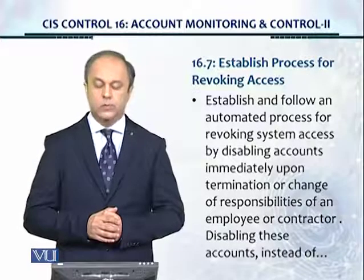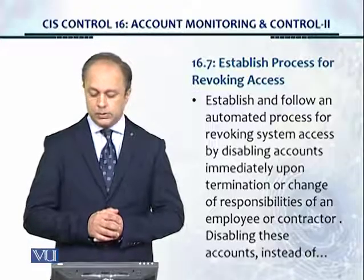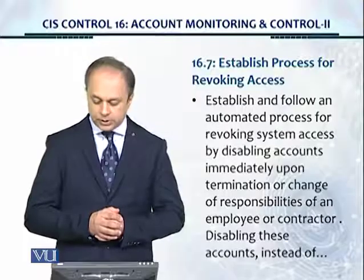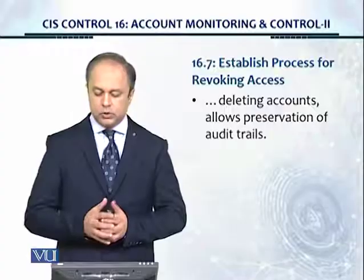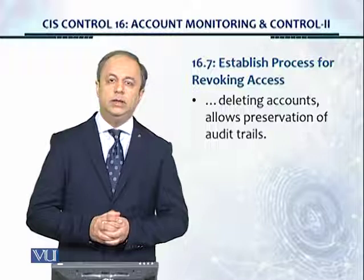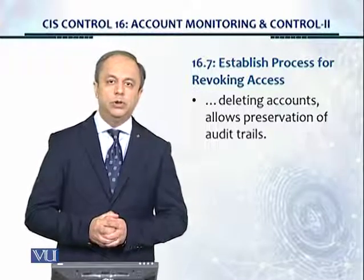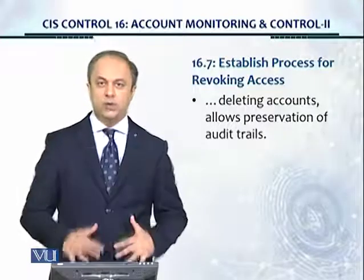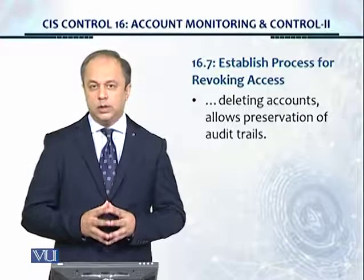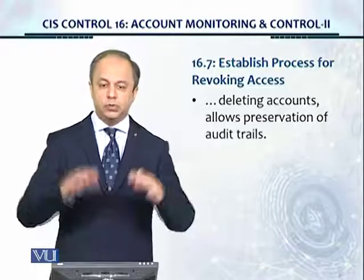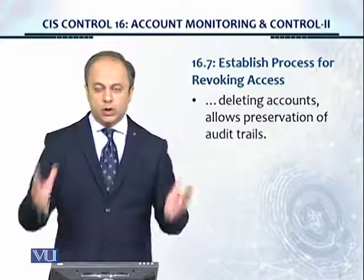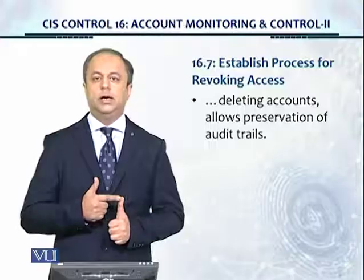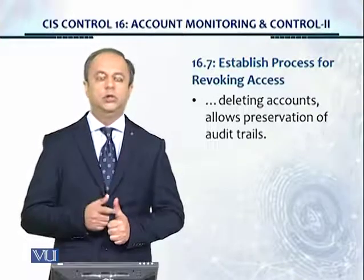16.7, Establish process for revoking access. Establish and follow an automated process for revoking system access by disabling accounts immediately upon termination or change of responsibilities of an employee or contractor. Disabling these accounts instead of deleting them allows preservation of audit trails. Many people join the organization, many people leave or are terminated, and many people move around. There are many accounts which, as discussed in Control 16.6, we need to maintain an inventory of, so we know who is accessing the systems and what access has been granted. Once that inventory is made, we need to ensure we also revoke access when people leave, are terminated, or when their responsibilities change.